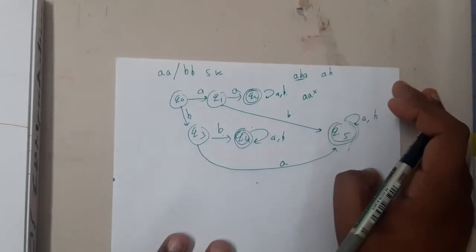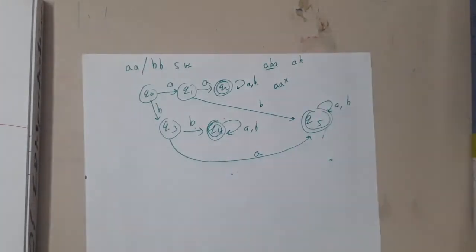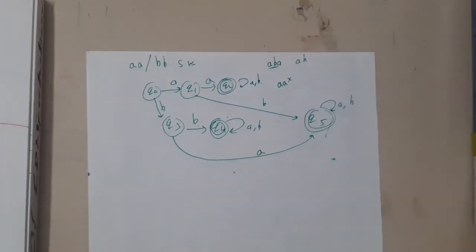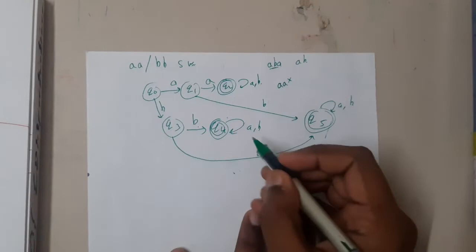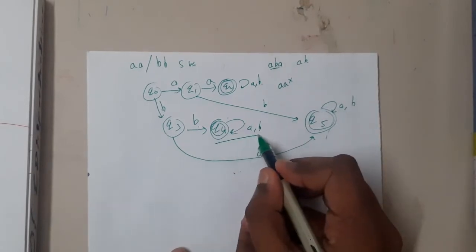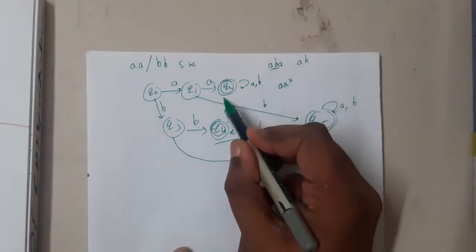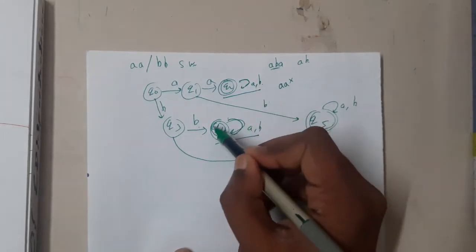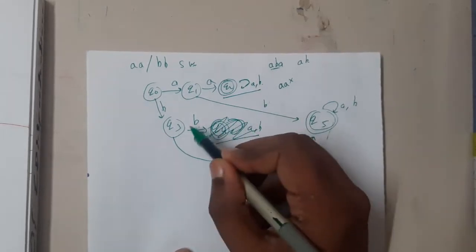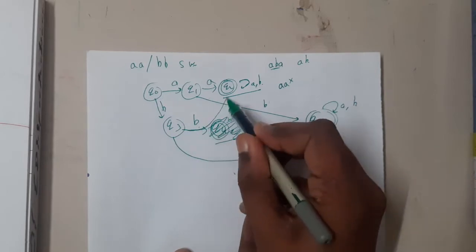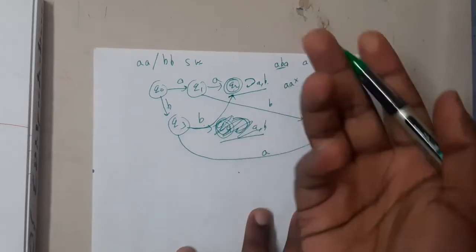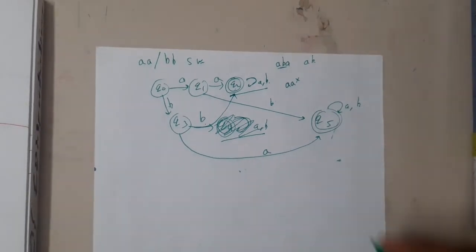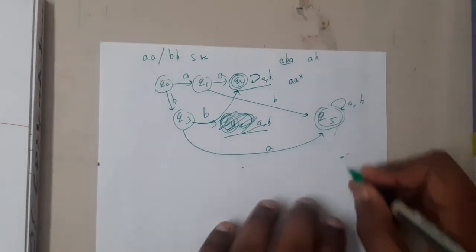Is this a minimized diagram? We will discuss minimization steps later. But notice: q4 is a final state with a self-loop, and q2 is also a final state with a self-loop — both are the same. So I can remove q4 and connect that link directly to q2. Both are the same, so I delete one and replace the link. This is the minimized diagram.